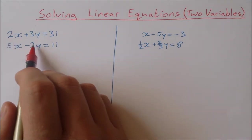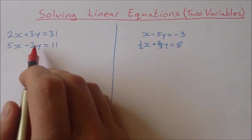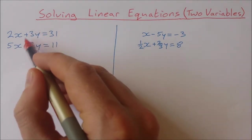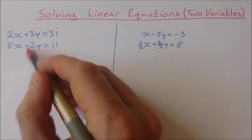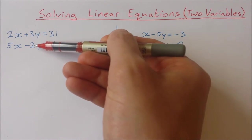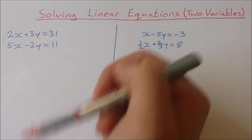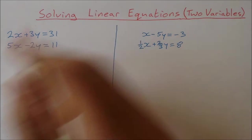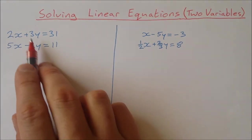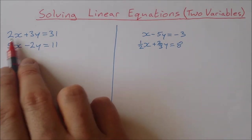What we need to do is pick either the x's or the y's and get their coefficients to be opposite to each other. For example, if one is plus 3, we want the other to be minus 3. We're going to have to multiply one or both equations by some constant to make them opposite each other.